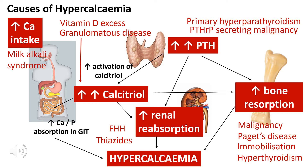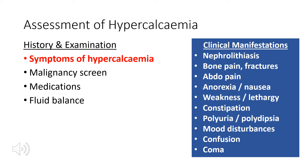Finally, you can get increased calcium reabsorption from the kidneys, as seen with thiazide diuretics and in familial hypocalciuric hypercalcemia (FHH). In FHH, patients have a higher set point of calcium before they switch off PTH, so they tolerate higher calcium levels than normal. PTH is continuously secreted, driving continual renal reabsorption of calcium, causing hypocalciuria and resulting in hypercalcemia.